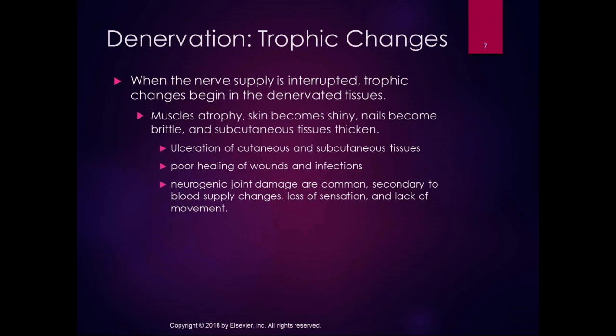Denervation produces trophic changes. When nerve supply is interrupted, you get muscle atrophy, the skin becomes shiny, nails become brittle, and subcutaneous tissues thicken. You can also get ulceration of cutaneous and subcutaneous tissues — seen with polyneuropathies like diabetic polyneuropathy — poor healing of wounds and infections, and neurogenic joint damage secondary to blood supply changes, loss of sensation, and lack of movement.